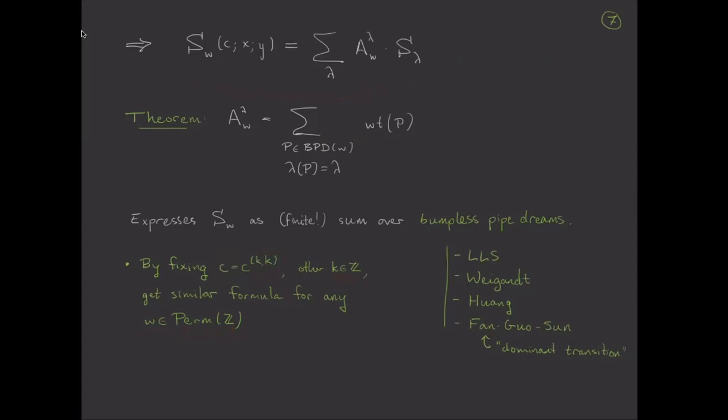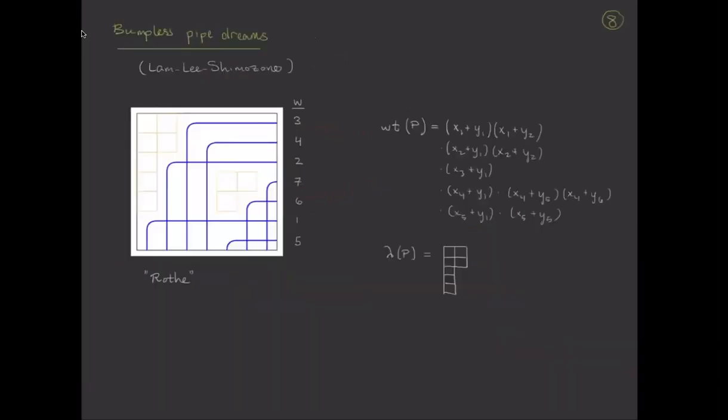Okay. So let me talk now for the rest of the time about bumpless pipe dreams. And fairly quickly, we're going to move away from these enriched or back stable Schubert polynomials and just into the specialization where we're going to get rid of the C's.